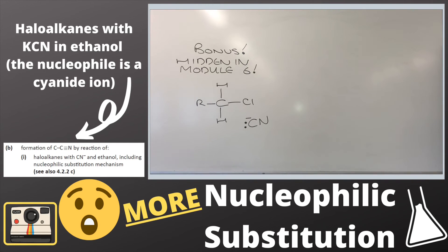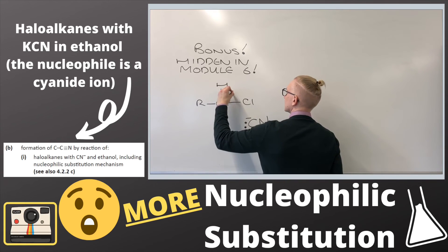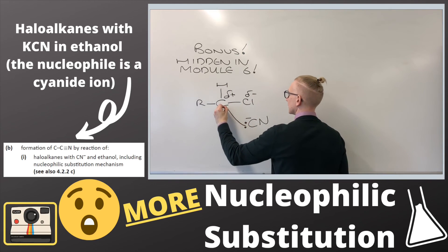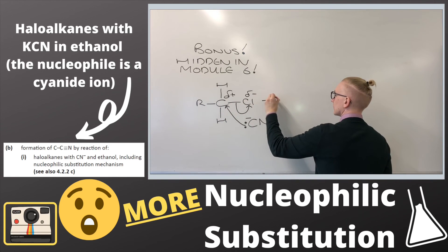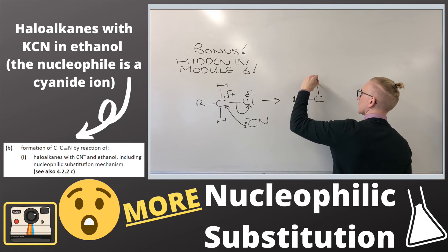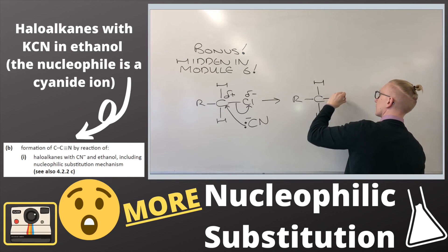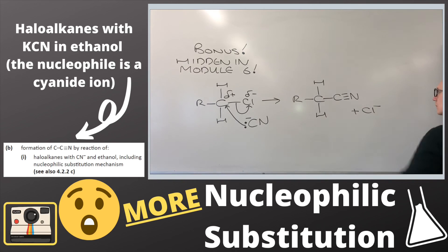This final mechanism is the same nucleophilic substitution we saw at the start of the video, but it's hidden in module 6 — the second year of the course — for when haloalkanes react with KCN in ethanol. It provides us with a cyanide nucleophile and it's a way of creating a carbon-carbon bond. Make sure you don't overlook this as an example of nucleophilic substitution right at the end of the second year of the course.